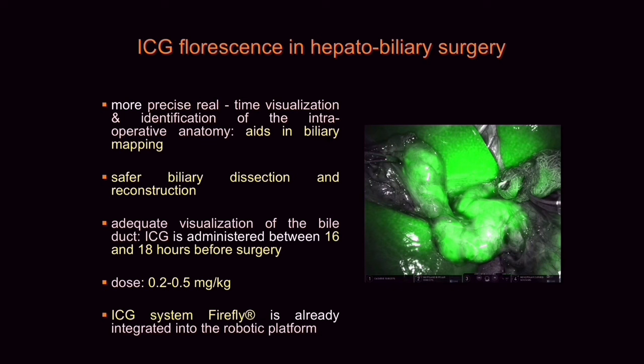ICG fluorescence in hepatobiliary surgery is used for biliary mapping as it results in precise real-time visualization and identification of the intraoperative anatomy. ICG fluorescence helps for safer biliary dissection and reconstruction. Adequate visualization of the bile ducts can be achieved when ICG is administered between 16 to 18 hours before surgery. The dose is usually 0.2 to 0.5 mg per kg. The ICG fluorescence system, the Firefly, is already integrated into the da Vinci robotic platform.